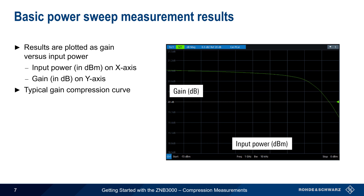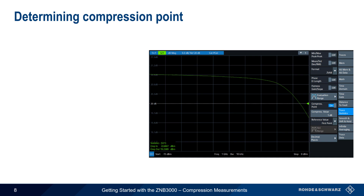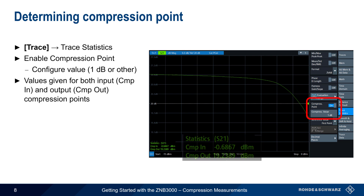The example shown here is a typical gain compression curve. Gain is mostly linear or flat at lower power levels, but decreases or rolls off as input power increases. The ZMB3000 can also automatically calculate compression points from the trace. This is done by pressing the Trace hard key, selecting Trace Statistics, and then enabling the compression point measurement. The default value is 1 dB but can be modified by the user. Once enabled, the compression point measurement automatically calculates both the input and output compression points and displays them on screen.